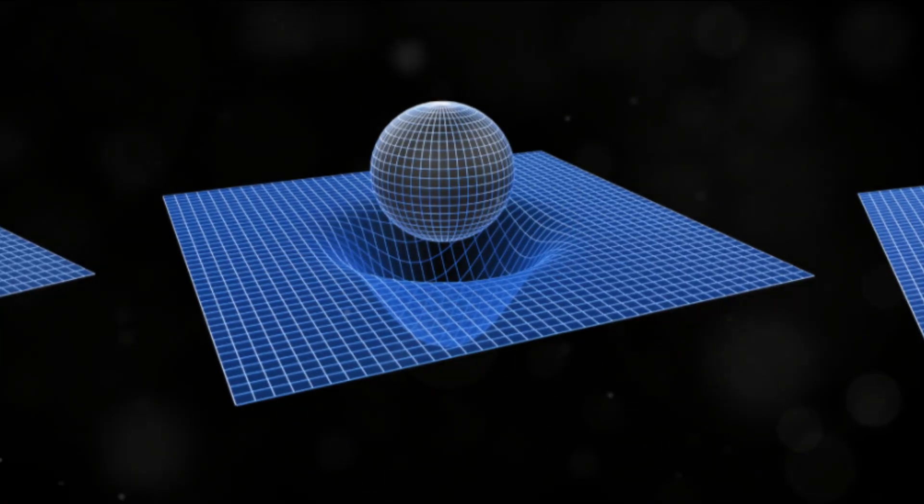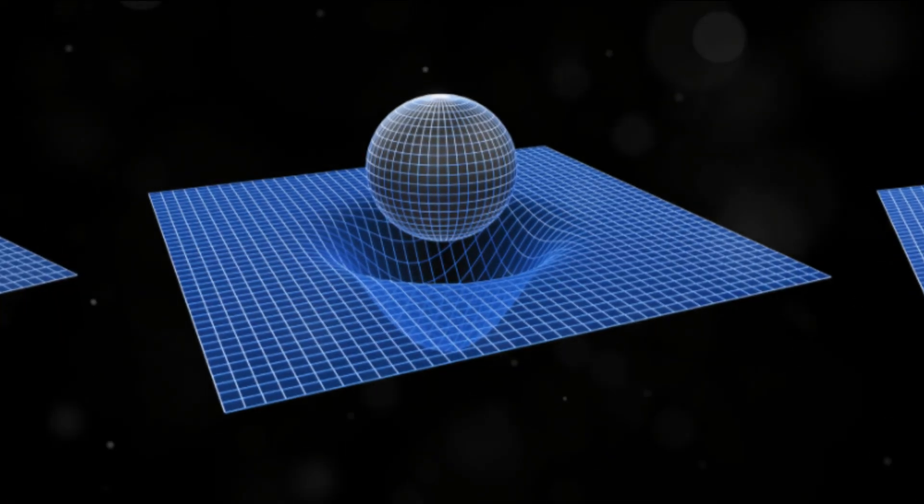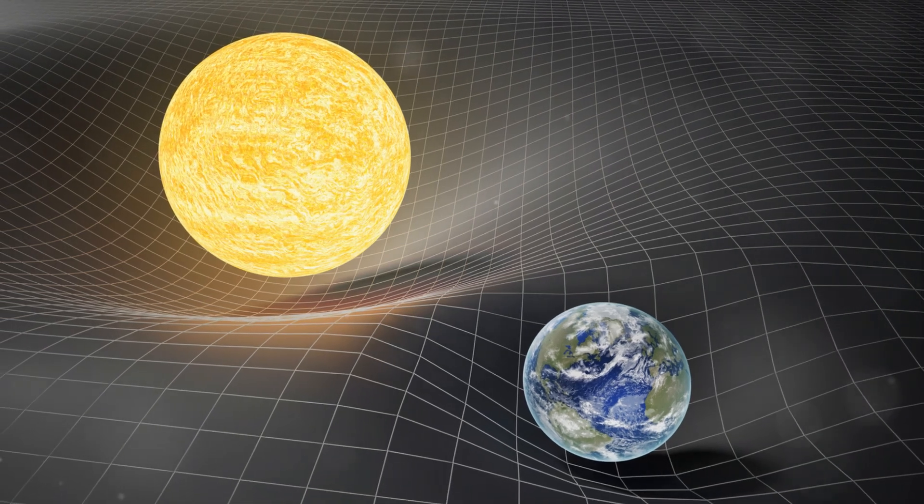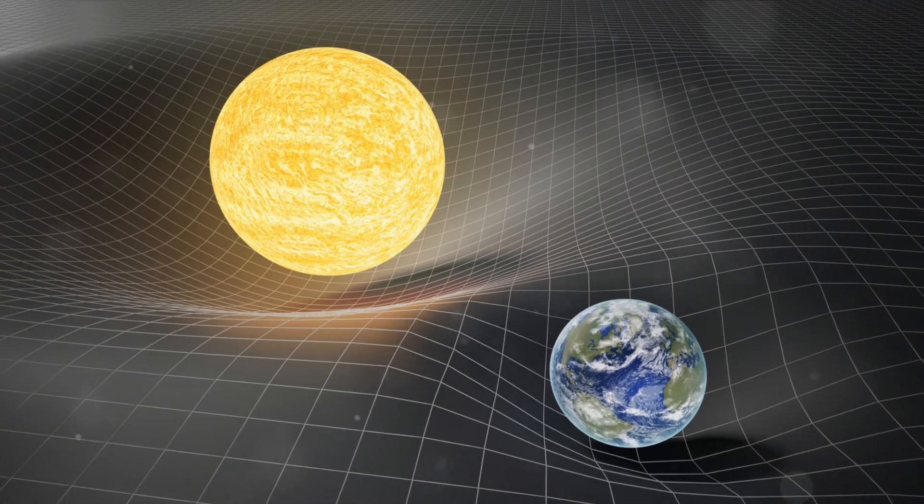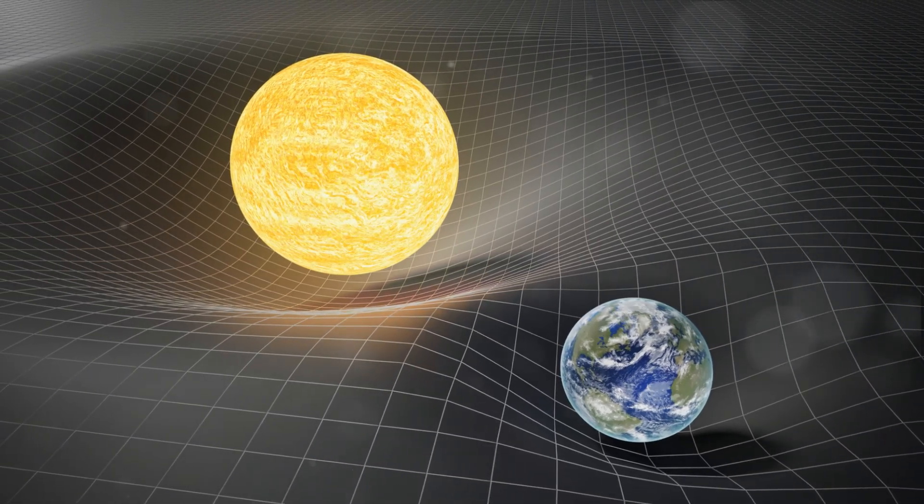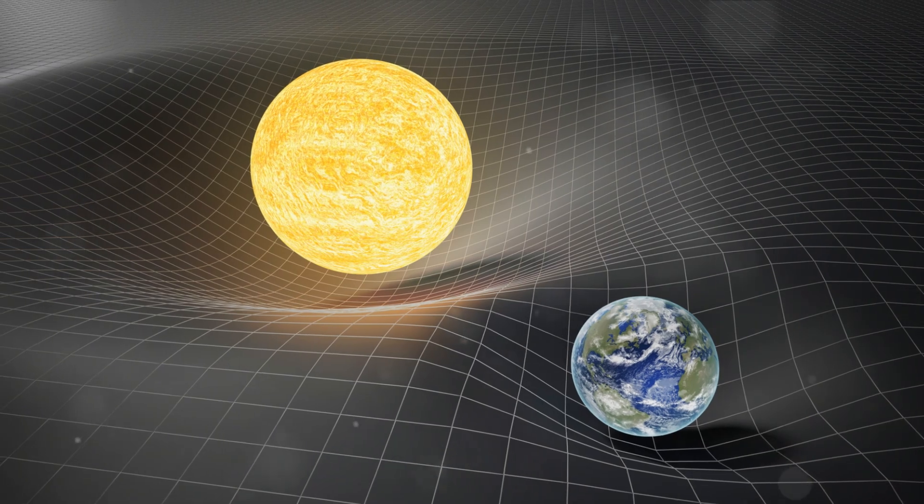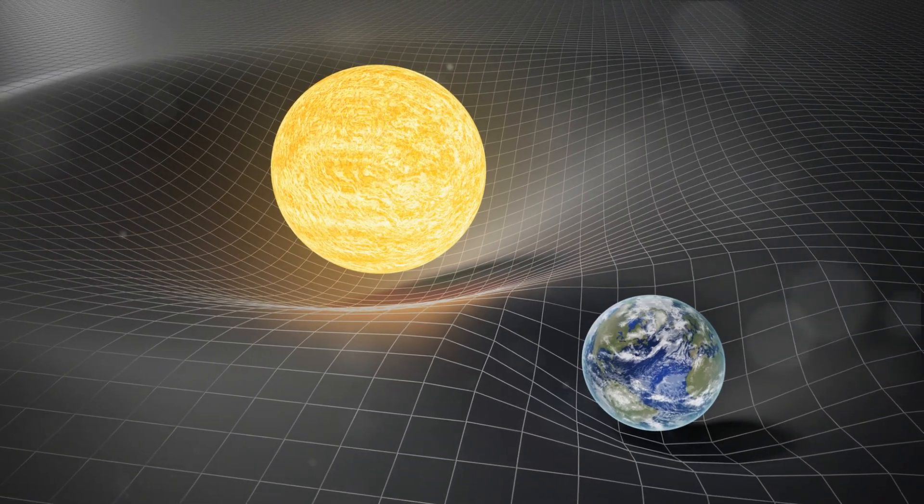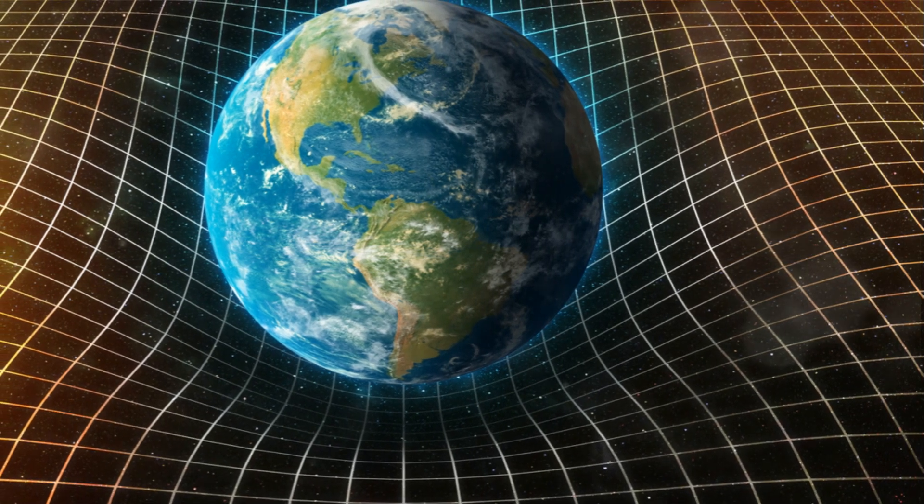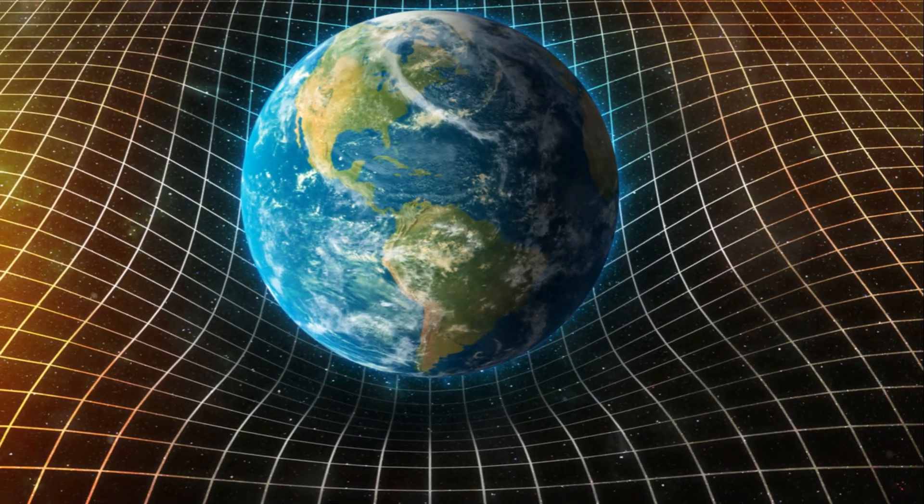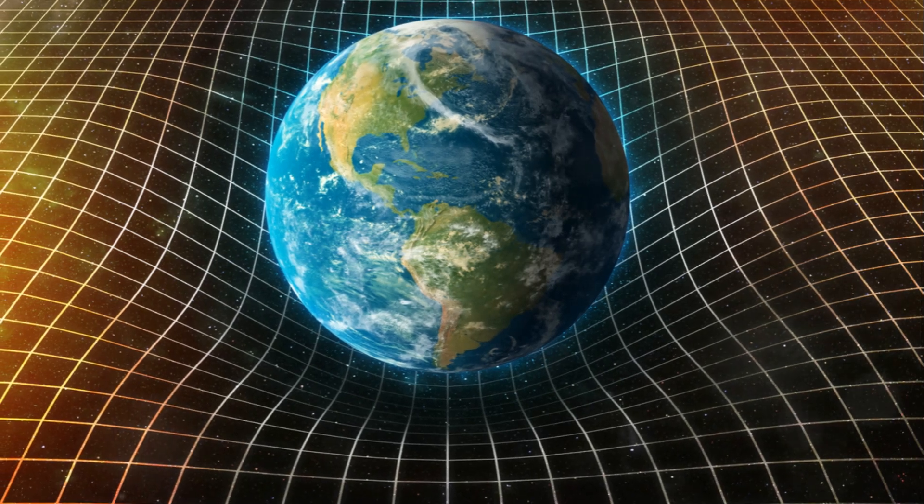Now imagine rolling a marble around the edge of this bowling ball-induced dip on the trampoline. The marble will spiral inward, toward the bowling ball. This is akin to how planets move around the sun or how the moon orbits earth. They are following the curves in space-time created by these massive objects. So what we perceive as gravity, the force that keeps our feet on the ground and planets in orbit, is actually the curvature of space-time caused by mass and energy.